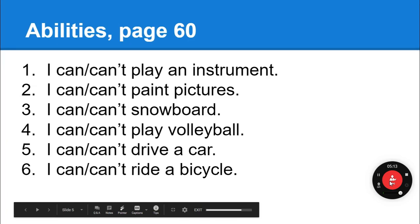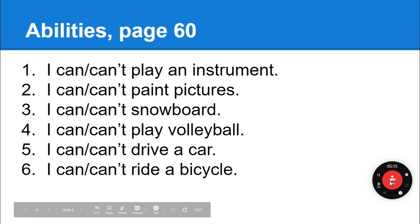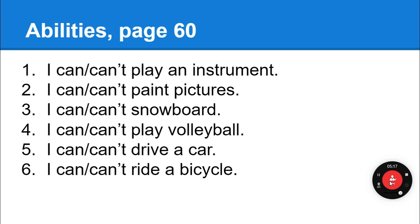Before we go any further, let's look at your abilities to be sure you have the sentences correct. You can say 'can' or 'can't.' The first box: I can or can't play an instrument. I can or can't paint pictures. I can or can't snowboard. I can or can't play volleyball. I can or can't drive a car. I can or can't ride a bicycle.